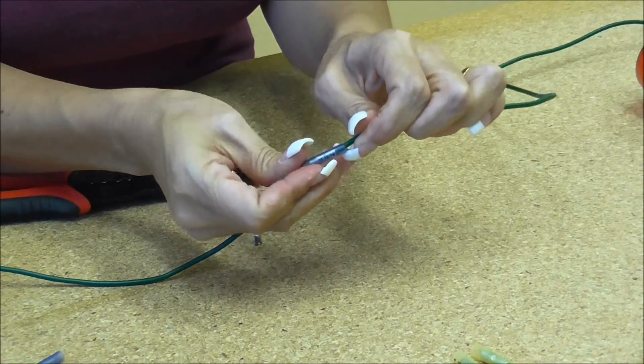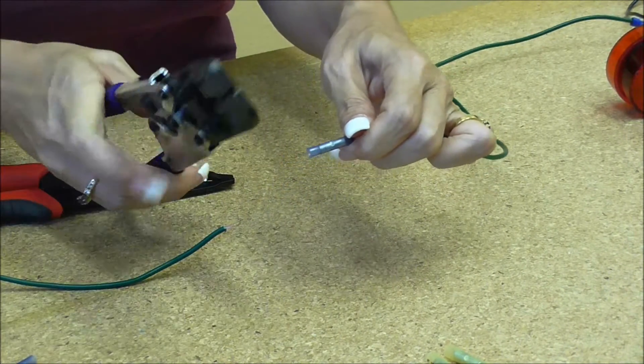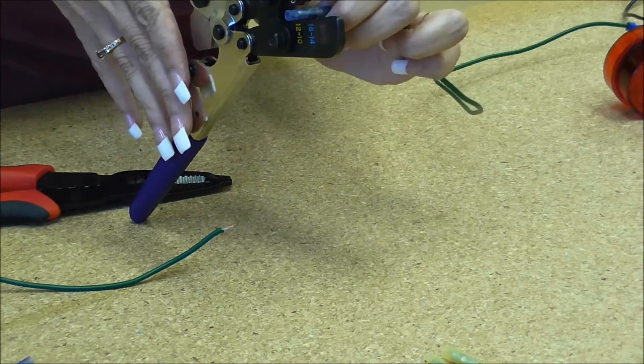Insert your wire into your butt splice. I'm going to use these crimpers. They're ratchet crimpers.